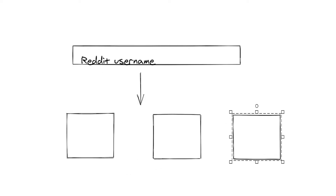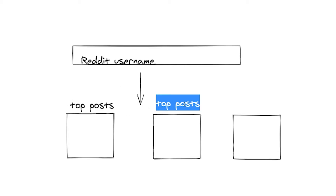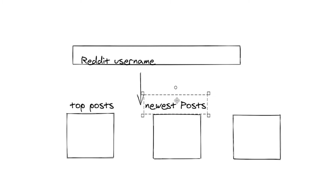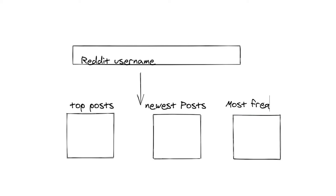Another option is a subreddit analysis tool where you take a subreddit name and show over time the post frequency, number of subscribers, most popular posts, and stuff like that. This is another really versatile API where you're only limited by your imagination.